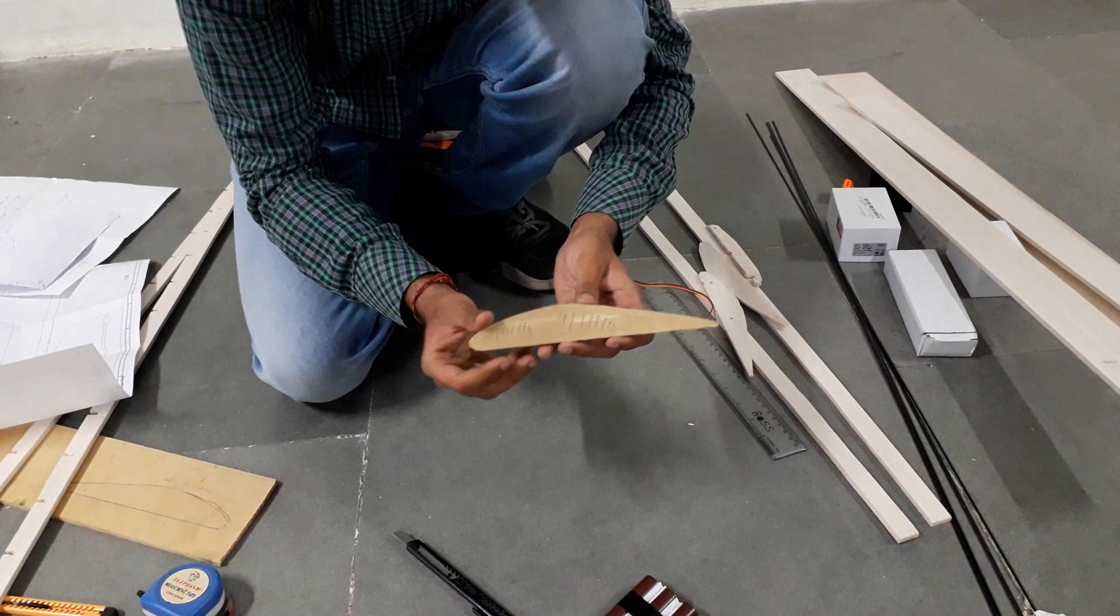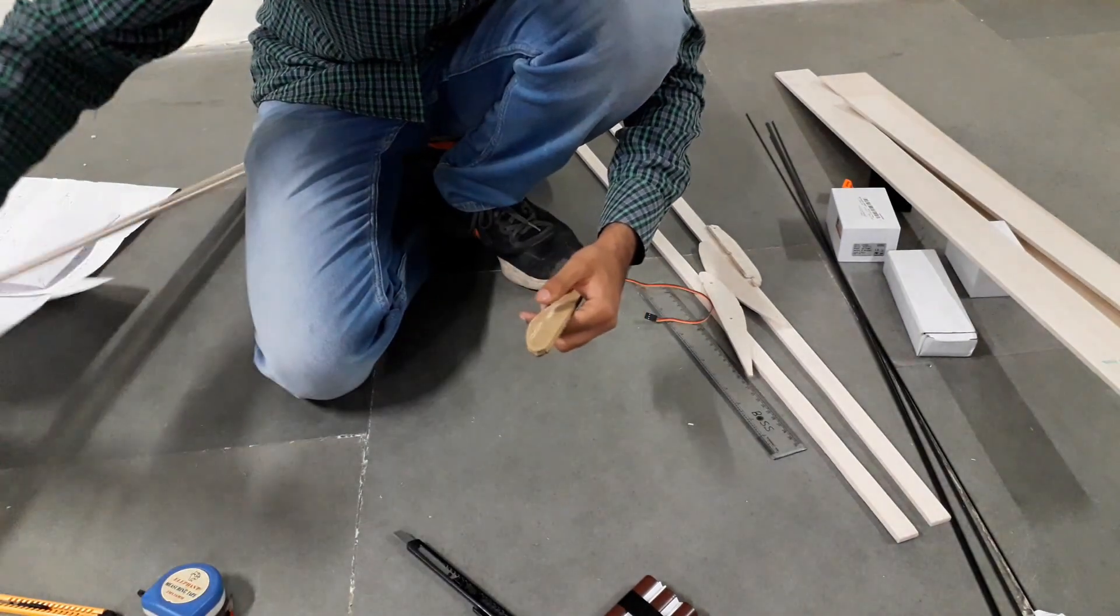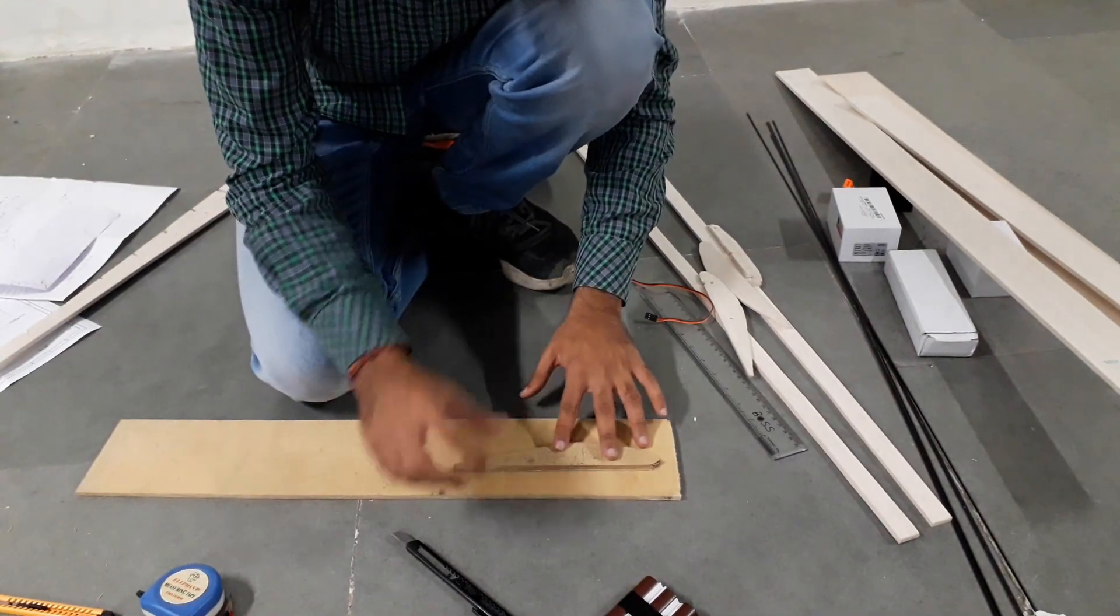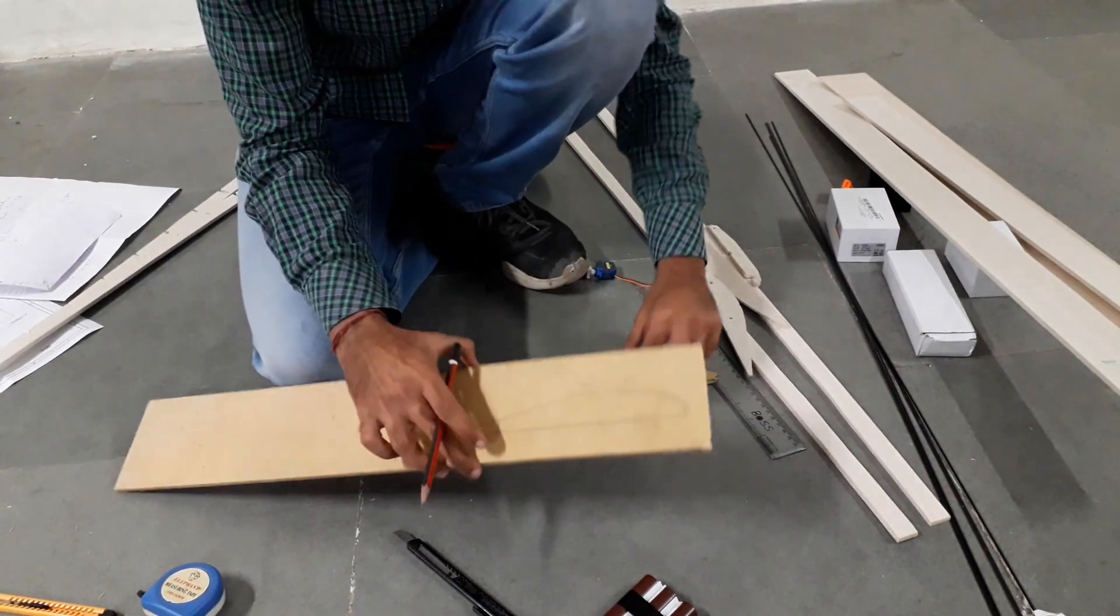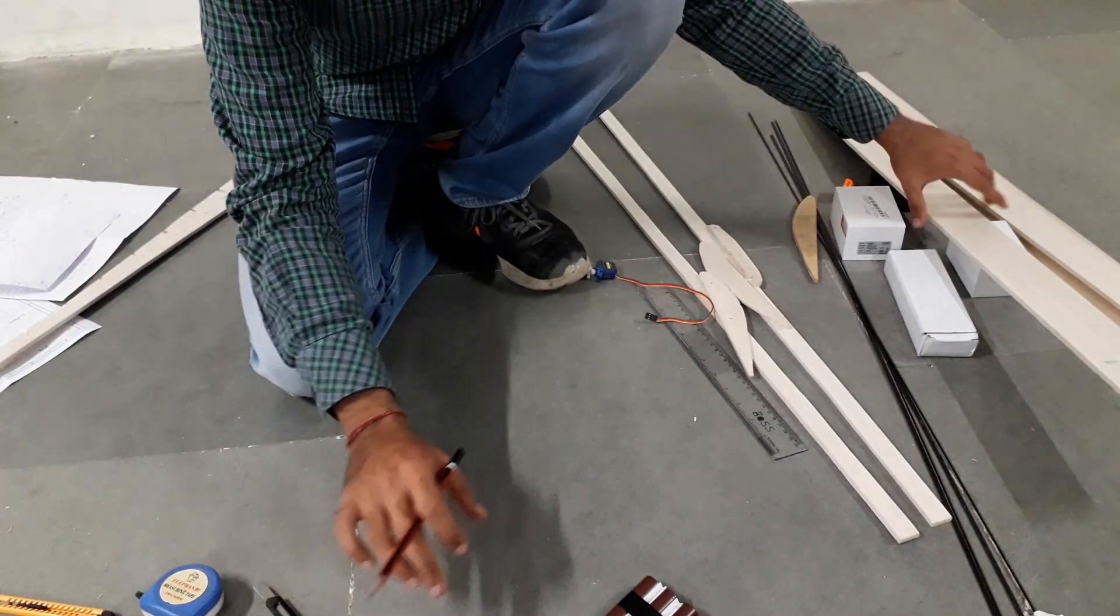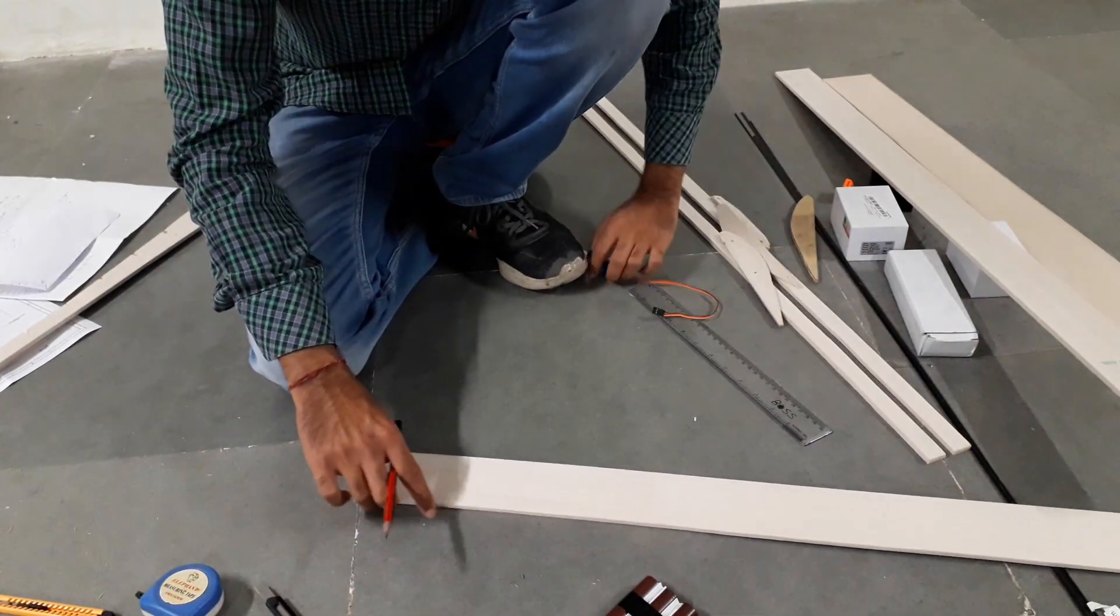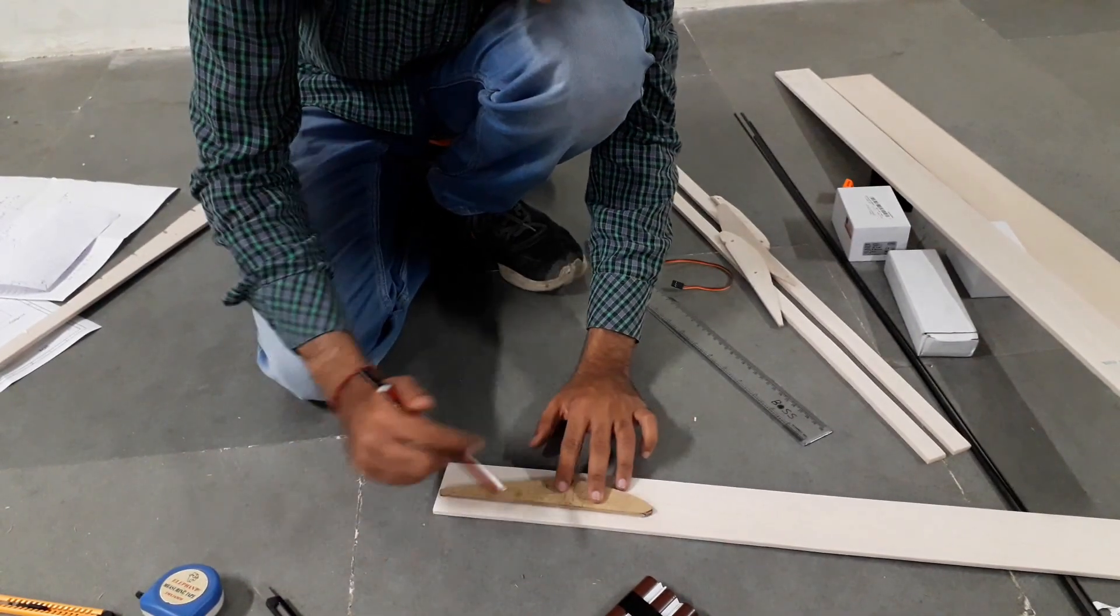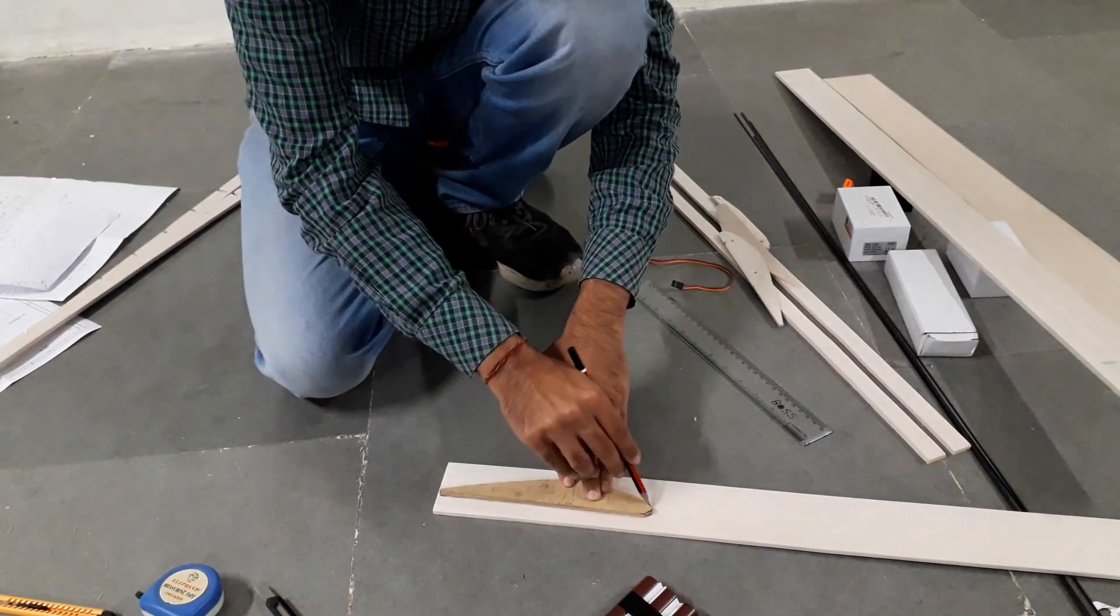The length of the rib is 20 centimeters. I will show you how you can make this. All you need to do is put it like this, draw the outlines and cut it down. So I will show you how you can make it on balsa. This is my balsa, put it like this, sketch it on balsa.